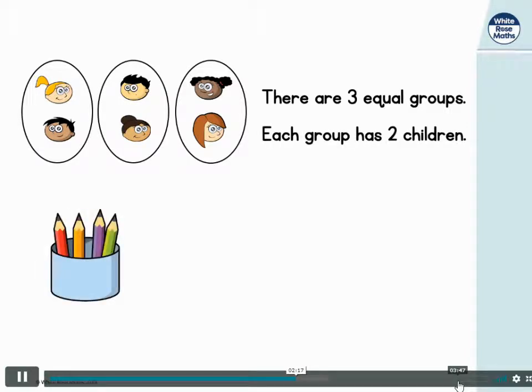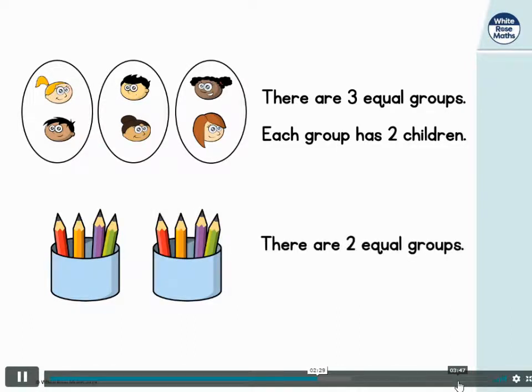Down here we've got a pot with four pencils in. Remember it's the quantity that's important and there are four pencils in this pot and four pencils in this pot, so there are two equal groups and each group has four pencils in.